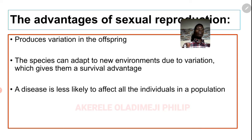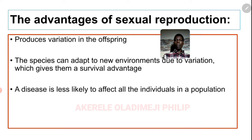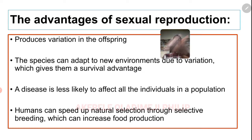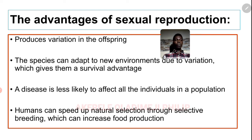Another advantage is that disease is less likely to affect all individuals in the population, because not all of them have the same weakness. Organisms produced by sexual reproduction have different variation — some might be weak, some might be strong — so the same disease cannot kill all of them. Also, humans can speed up natural selection through selective breeding to increase food production, creating hybrid breeds by crossing desired organisms.